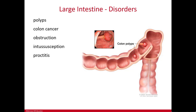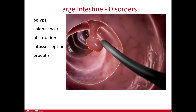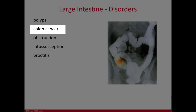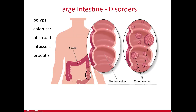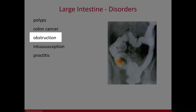Polyps are masses of tissue that grow from the wall of the large intestine and protrude into the lumen. They vary in size and shape, and most are benign, but biopsies can reveal precancerous or cancerous tissue requiring removal. Colon and rectal cancers are the second leading cause of cancer deaths after lung cancer. Many occur in the distal end — the rectum and sigmoid colon — and can metastasize to lymph nodes, the liver, lungs, and brain.